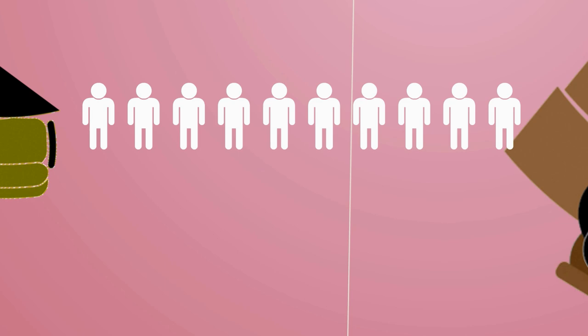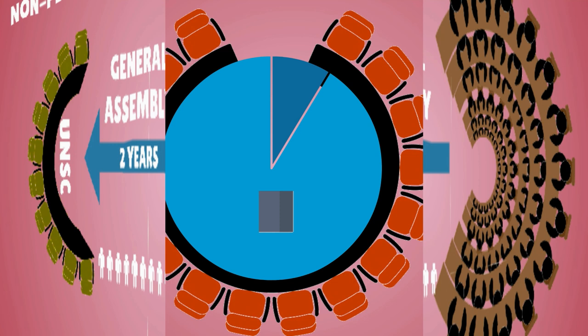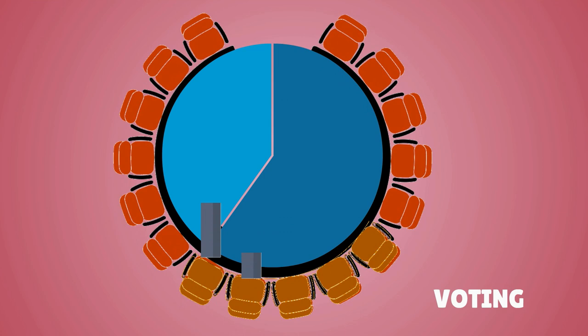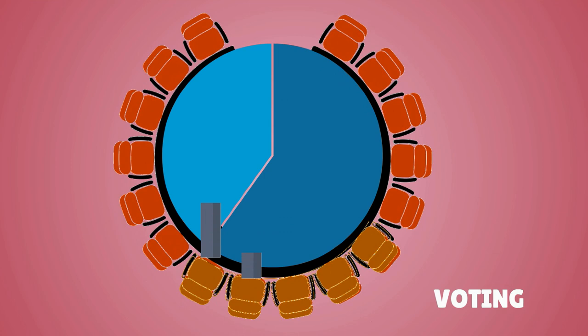The second category is composed of ten non-permanent members elected by the General Assembly on a regional basis to serve two-year terms. The decisions of the council require nine affirmative votes, which includes the concurring votes of the permanent members.